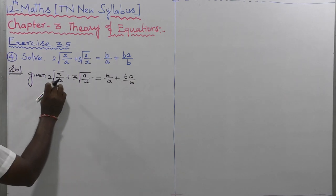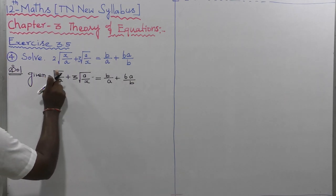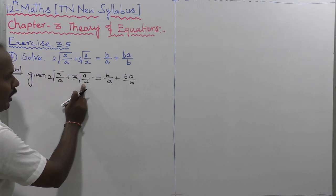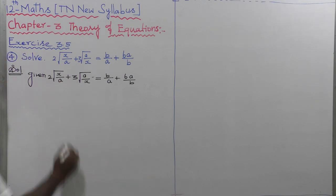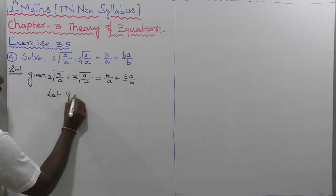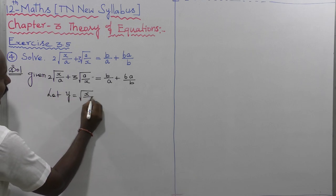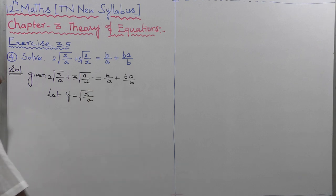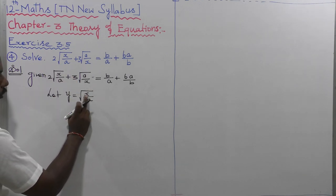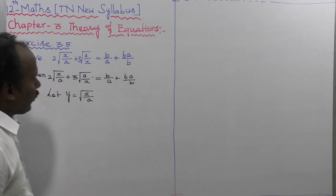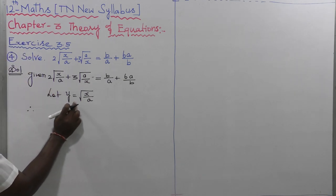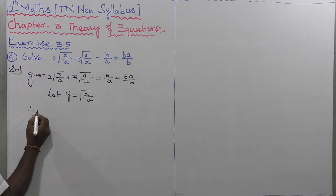First of all, let us consider the value of root of A by X. This one, A by X — this one is the reciprocal of X by A. Let us consider the value of Y that is equal to root of X divided by A. So let us replace root of X divided by A with Y.